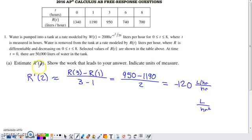Part A says estimate R'(2), show the work that leads to your answer, indicate units of measure. In any table of values problem you've seen from other AP exams, you've probably done something similar to this.